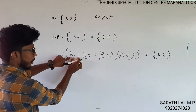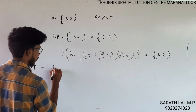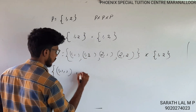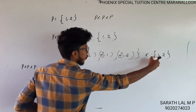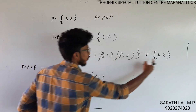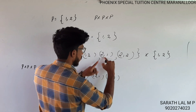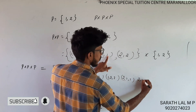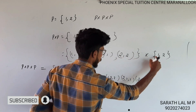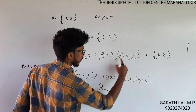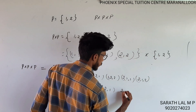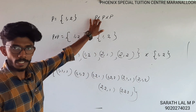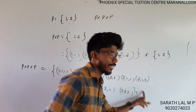P cross P cross P gives the triples: (1,1,1), (1,1,2), (1,2,1), (1,2,2), (2,1,1), (2,1,2), (2,2,1), (2,2,2). When you compute three or four times cross, you get the cross product. Now, P cross P gives 2×2=4 elements, and P cross P cross P gives 2×2×2=8 elements.